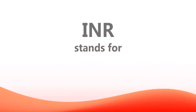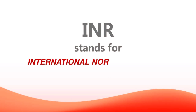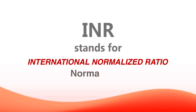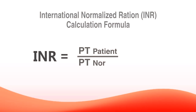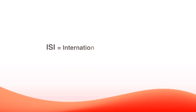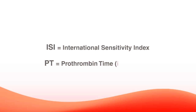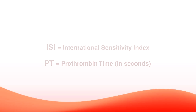INR stands for International Normalized Ratio. The normal number in our bodies is about 1.0. INR is calculated by a formula: it's the PT of the patient divided by the normal PT, raised to the ISI — the International Sensitivity Index. PT stands for prothrombin time. So basically, this big long calculation tells us in layman's terms how thin somebody's blood is.